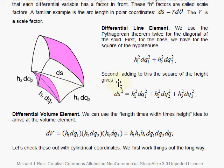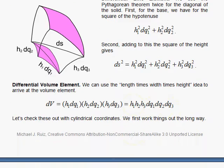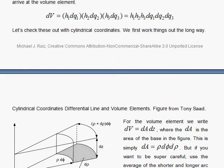And your arc length here, ds, if you square that, that's obtained by using the Pythagorean theorem by squaring each of these and adding them together. And the volume element, you would multiply length times width times height. So this is a nice general formula that will really help us understand coordinates in general.